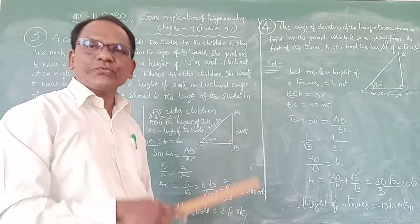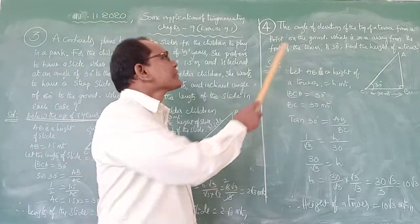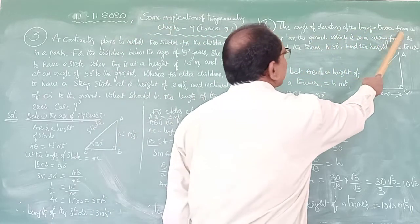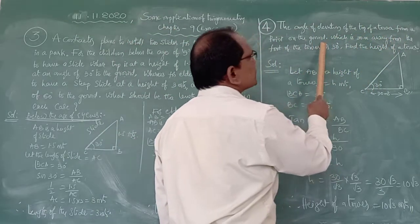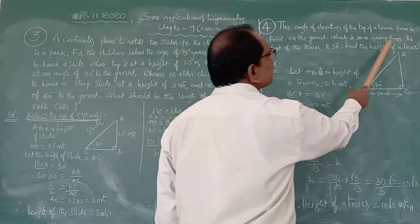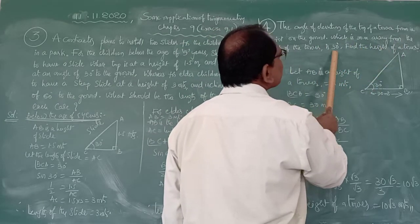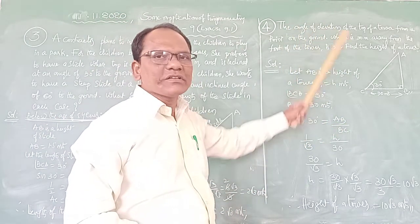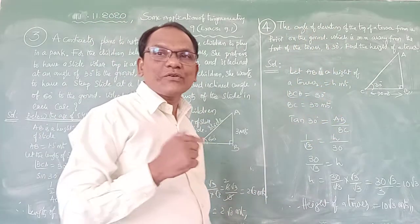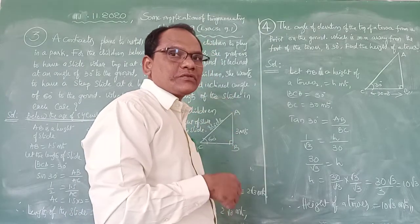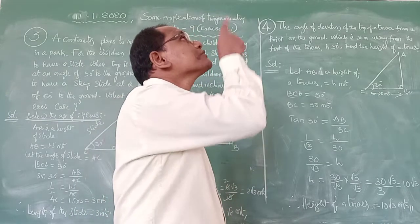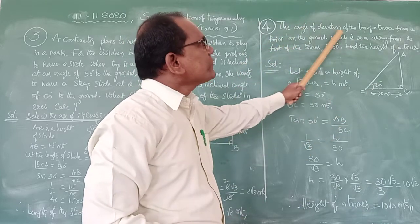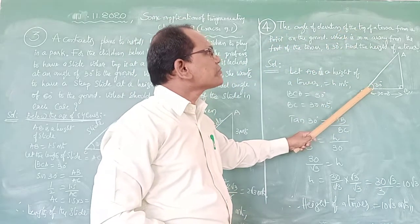Now we come to the fourth problem. I am reading — listen carefully. The angle of elevation of the top of a tower from a point on the ground, which is 30 meters away from the foot of the tower, is 30 degrees. Angle of elevation means we raise our head upward to see the top — that is the angle of elevation.